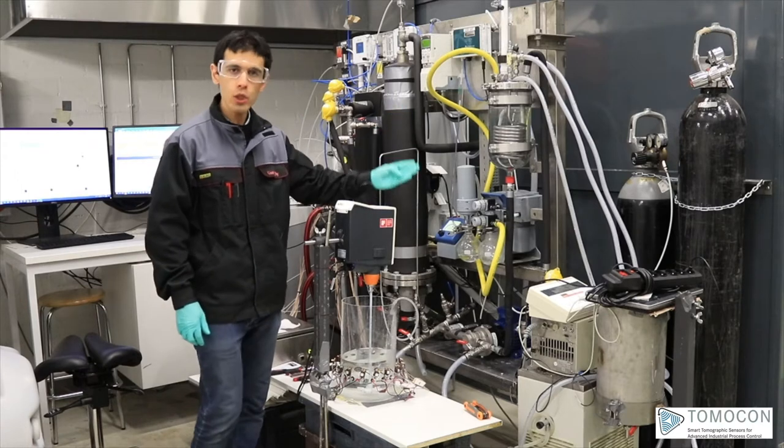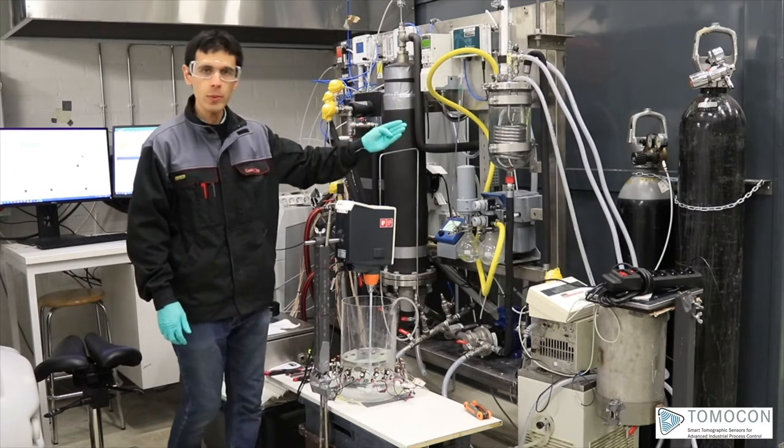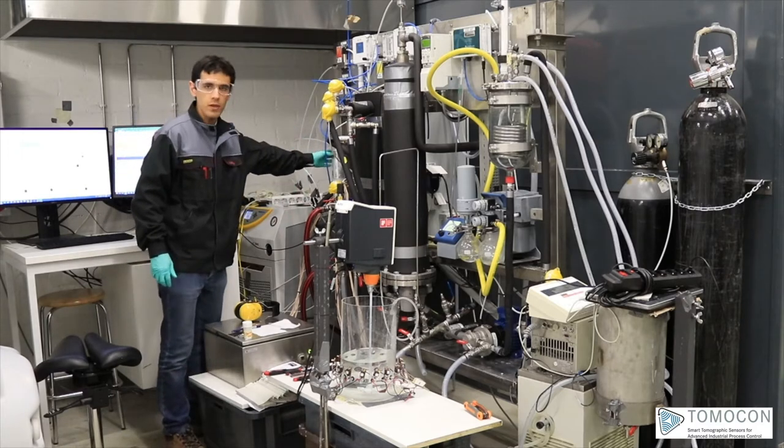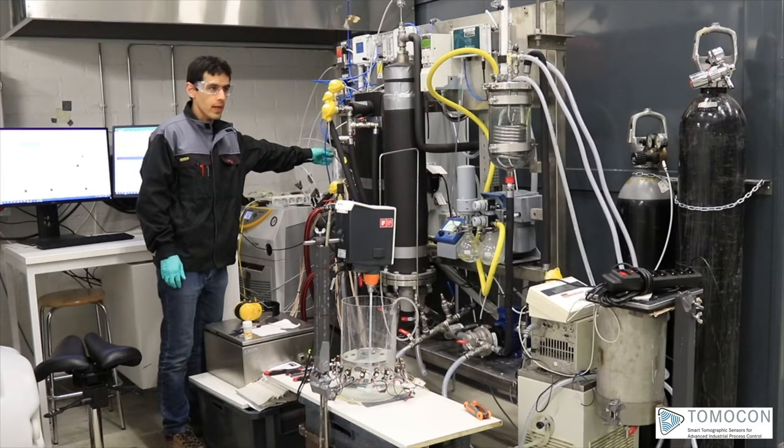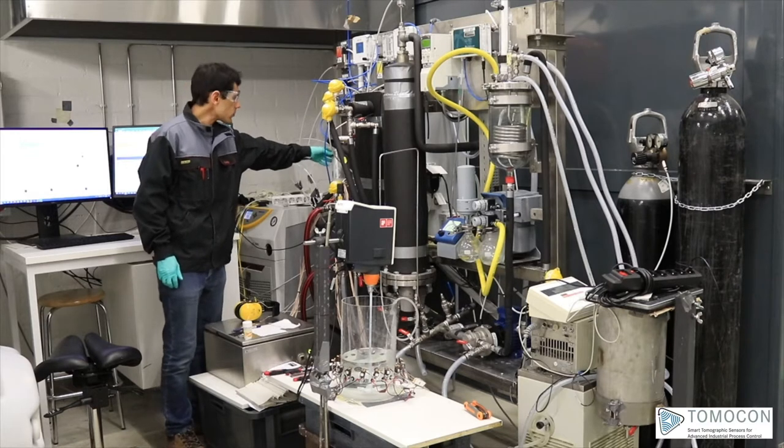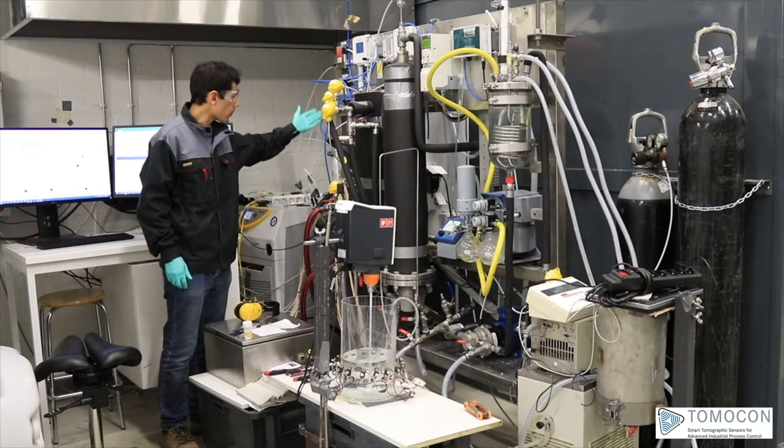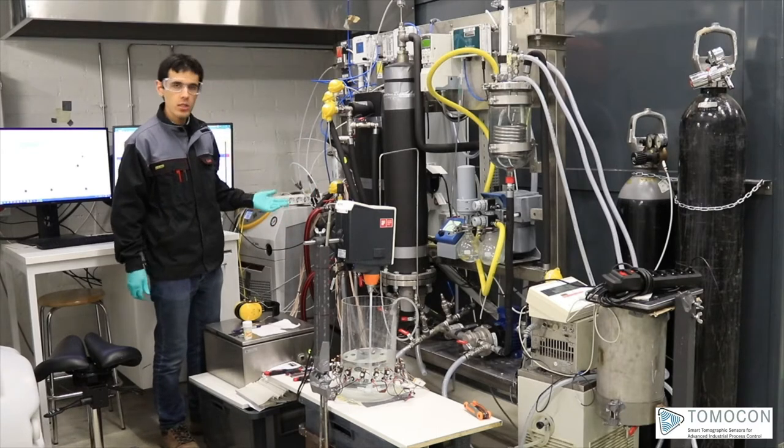There is a pump in there that circulates that absorbent solution into the unit. It goes like this part here where there is a hollow fiber membrane contact. And with pressure difference at the bottom and top, the liquid again circulates inside the solution.